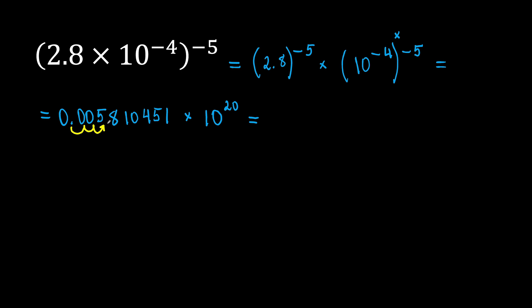We will move it to get 5.8. We will get 5.810451. Now, this number will be in scientific notation because it is greater or equal than 1 and less than 10 times 10 to the power of negative 3.